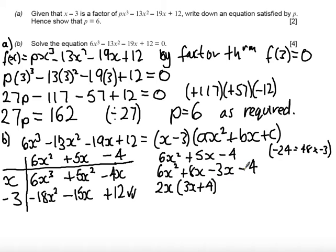The second pair of terms don't appear to have a common factor, but what I need is a 3x plus 4. So I'm going to take minus 1 out as a common factor and in my other bracket it leaves me 3x plus 4.